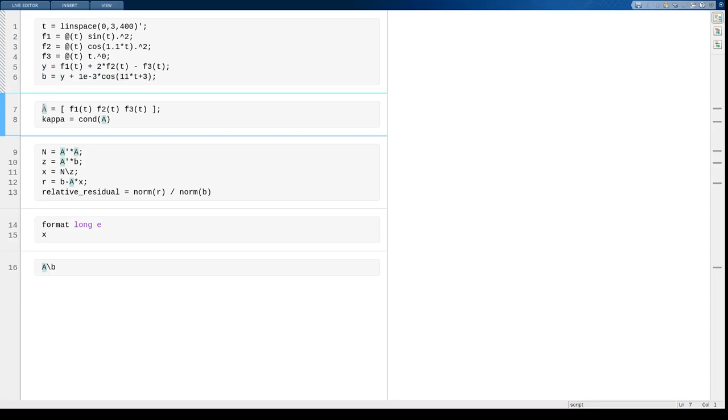Next, I'm going to set up the matrix. So the columns of the matrix are evaluations of my three functions at all the different time values. So this matrix will be 400 by 3.